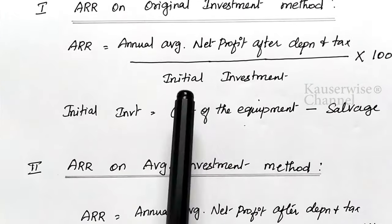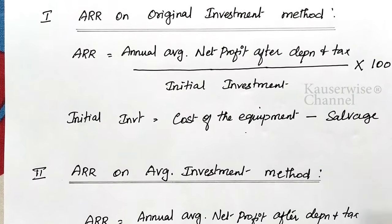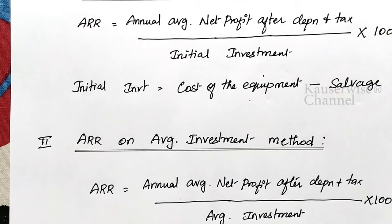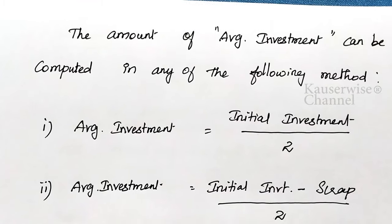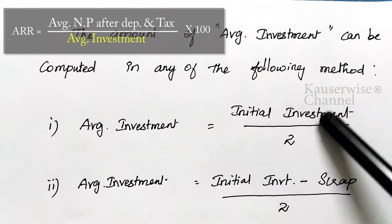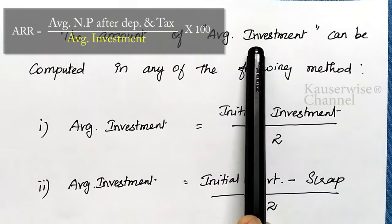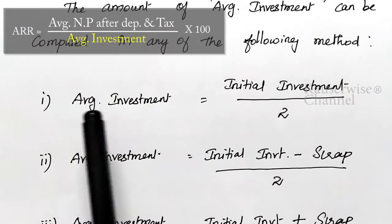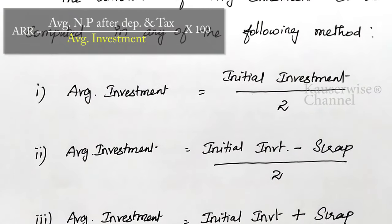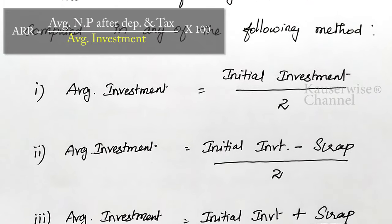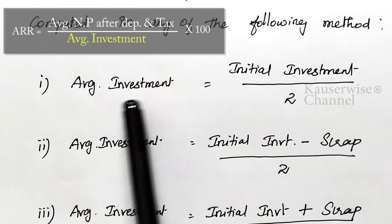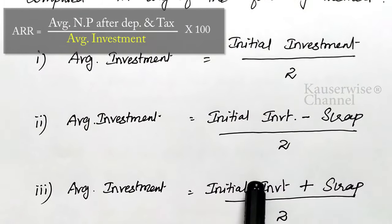Now the next part is how to calculate average investment. The initial investment will be given in the problem itself. In case of average investment, there are four alternative formulas to find it out. The first one is: average investment equals initial investment divided by 2. This applies only when scrap value is not given in the problem.